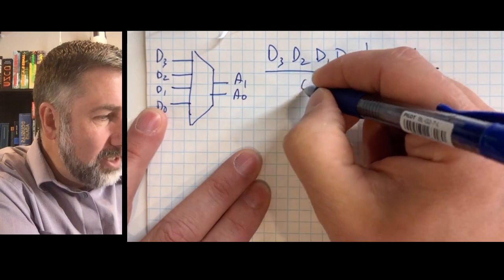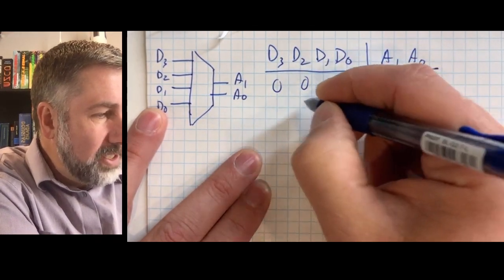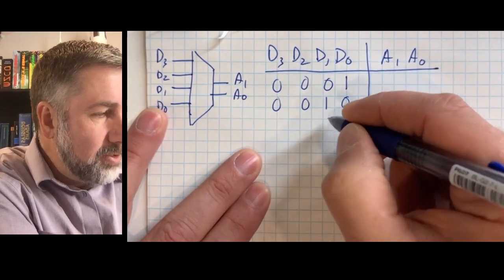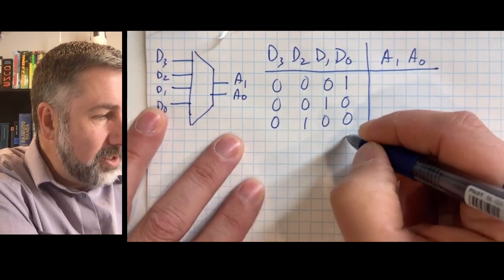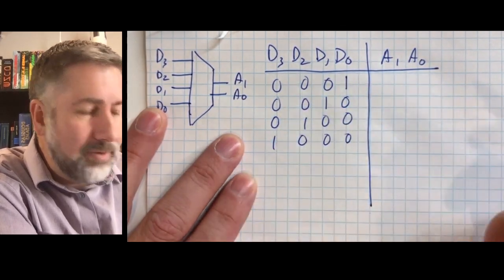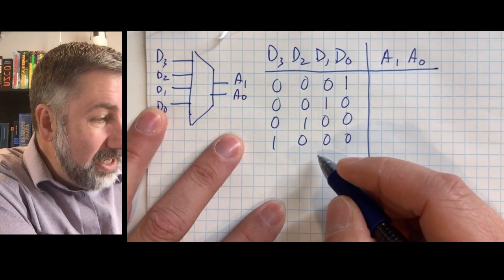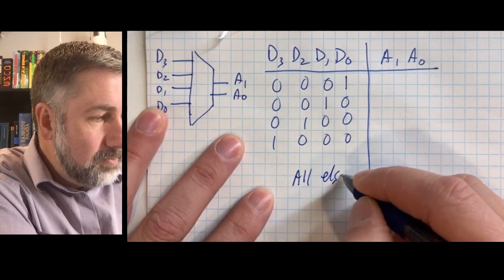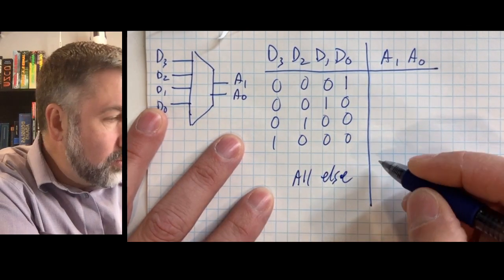There's D0 is active and the other ones are not. There's D1 is active and the other ones are not. There's D2 is active and the other ones are not. And there's D3 is active and the other ones are not. Everything else is don't care.